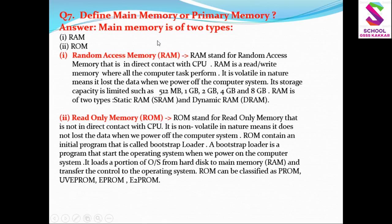अब बात करते हैं कि main memories या primary memory कौन-कौन सी होती हैं और कैसे काम करती हैं। सबसे पहले है RAM - Random Access Memory. RAM stands for Random Access Memory, that is in direct contact with CPU. RAM is a read and write memory - RAM जो होती है ये read और write दोनों करती है।